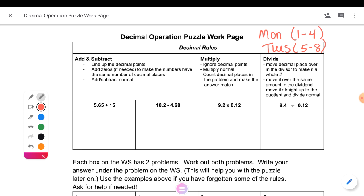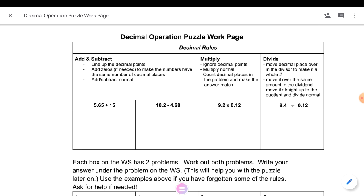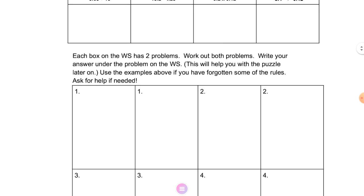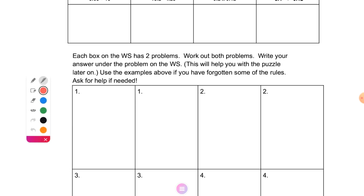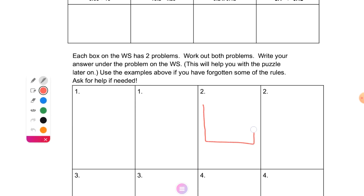We're going to do part of box one together. On your work page it says: each box on the worksheet has two problems, work out both problems, write your answer under the problem on the worksheet — this will help you with the puzzle later on. Use the examples above if you have forgotten some of the rules, and ask for help if needed. I'm going to draw box one up here.